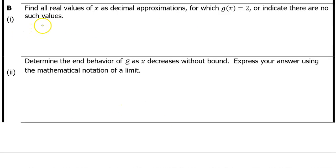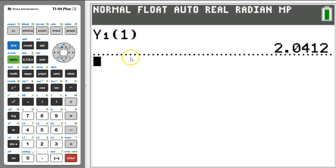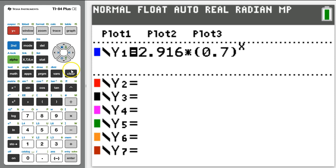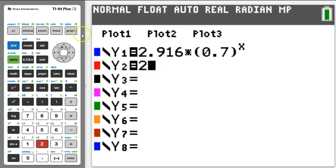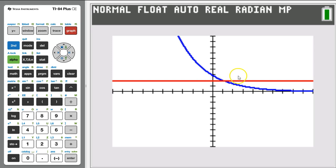B part 1. Find all real values of x as decimal approximations for which g of x equals 2 or indicate that there are no such values. We can use the graphing calculator to find where g of x is equal to 2. Hit your y equals button and enter y equals 2 as y2. g of x will equal 2 at the intersection point between g of x and the line y equals 2.